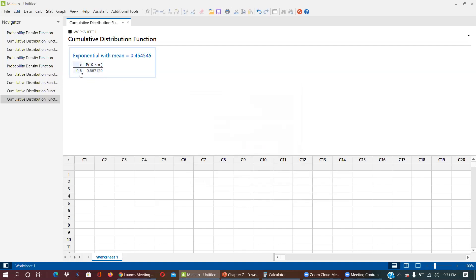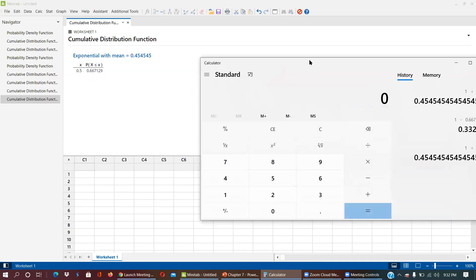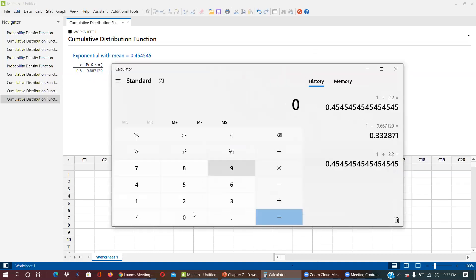This value is less than. Now we are interested in greater than, x value greater than. What we have to do like we used to do, we just subtract from one. If you can see, 1 minus 0.667129, we get the answer 0.332871, which you can say 0.3329.